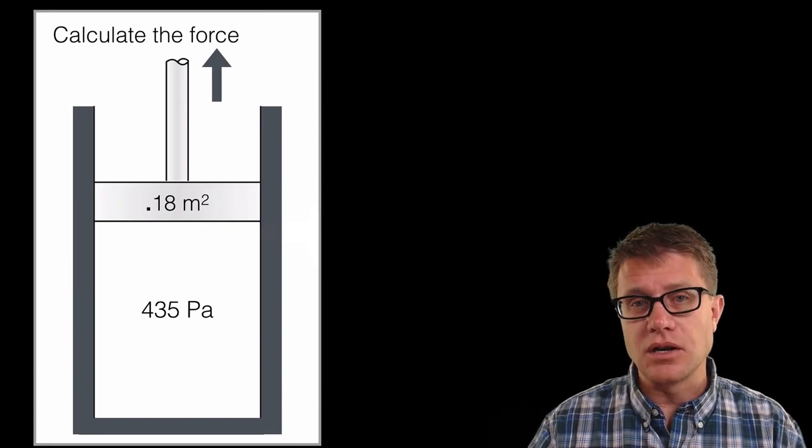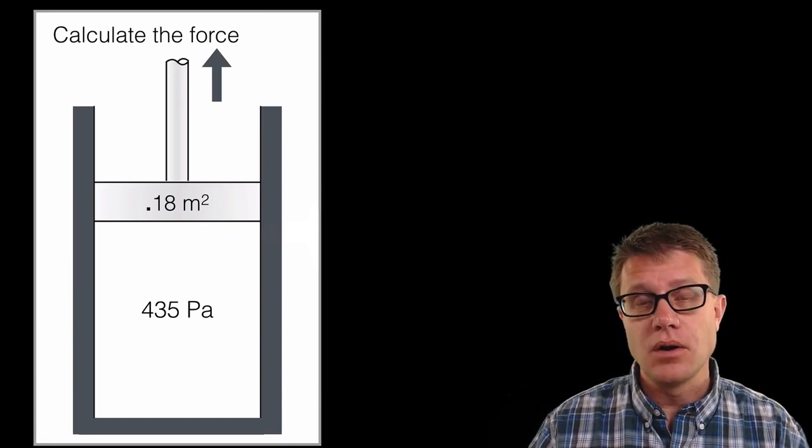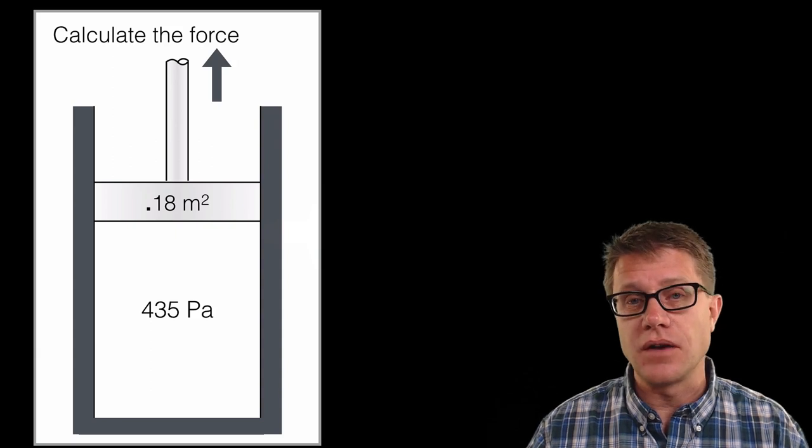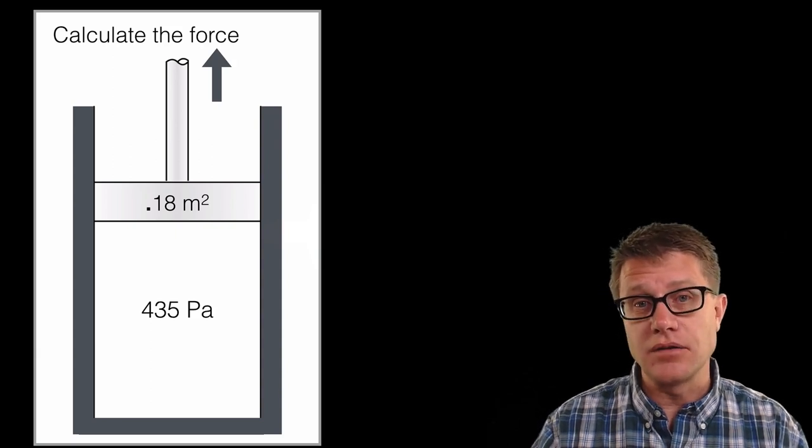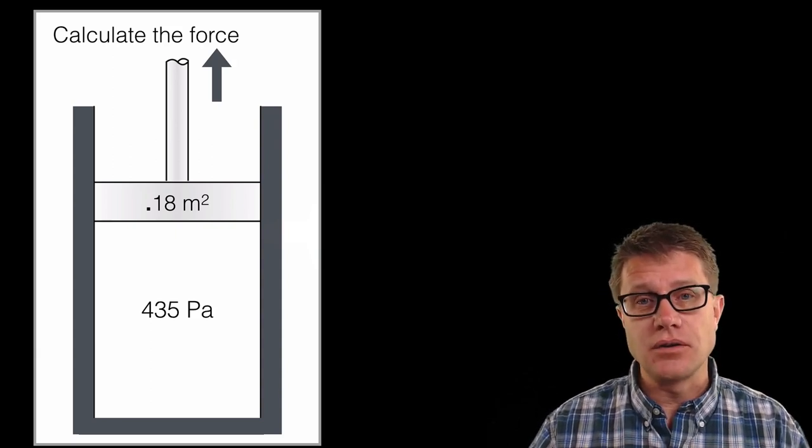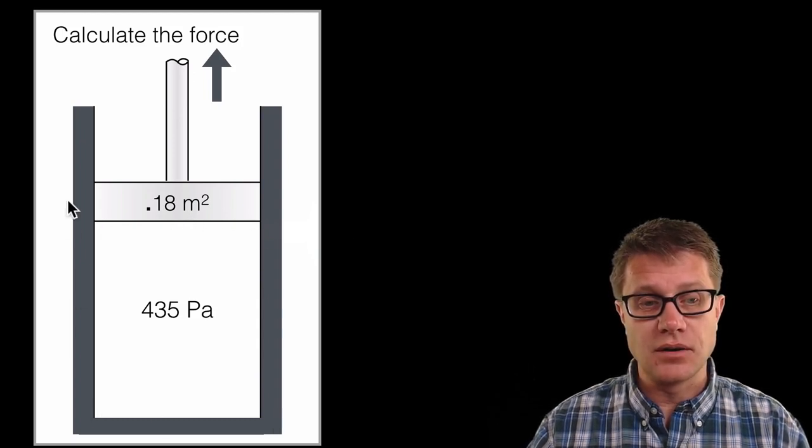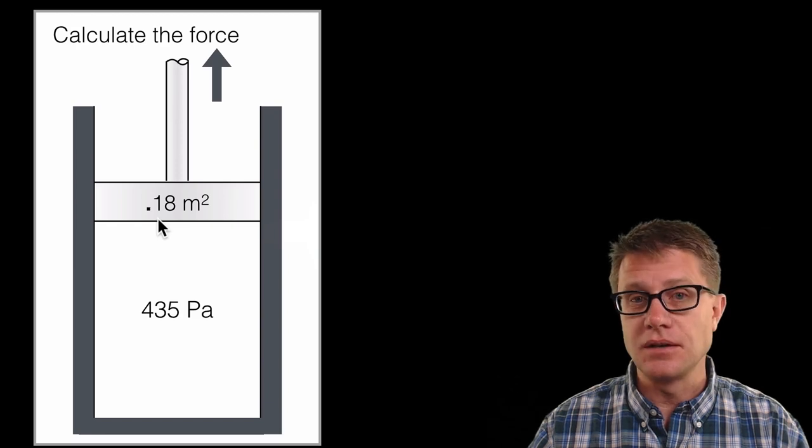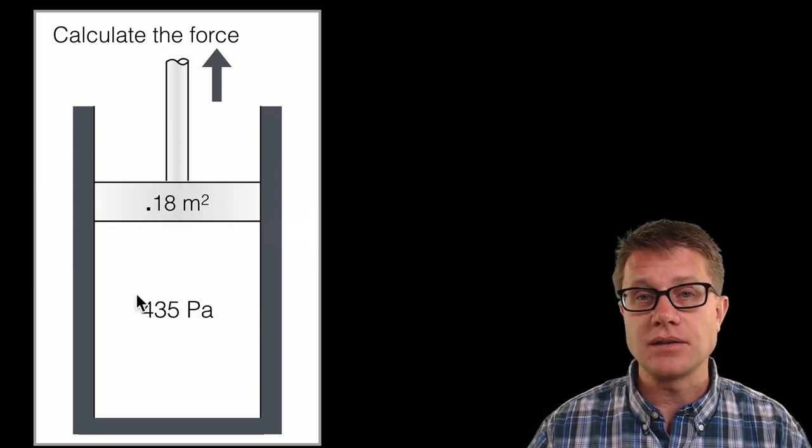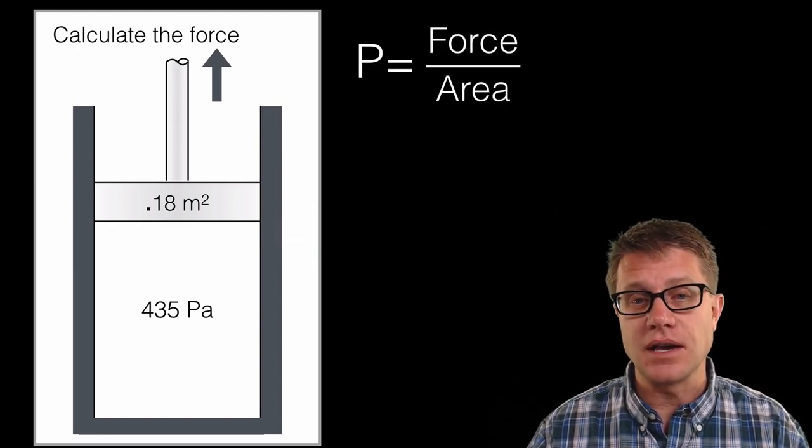Calculate the force exerted on a piston if we know what the pressure is, 435 pascals. And we know the area of the piston itself. So the first thing you have to realize is that since the pressure is uniform throughout this container, what is going to be the pressure pushing on the piston? It is 435 pascals.